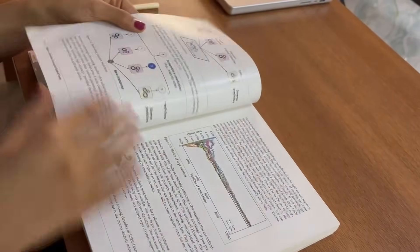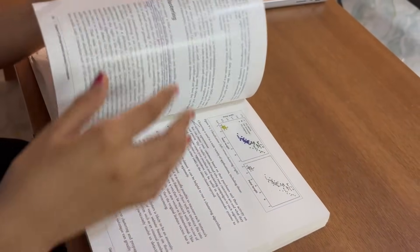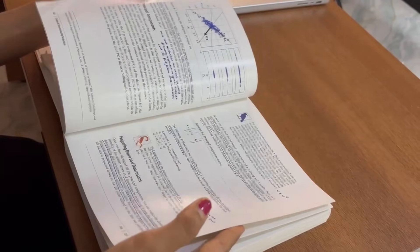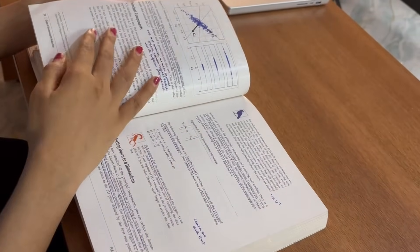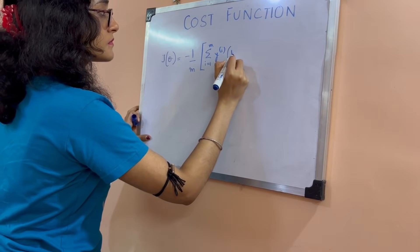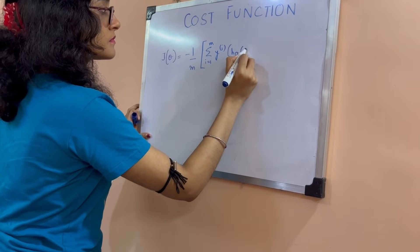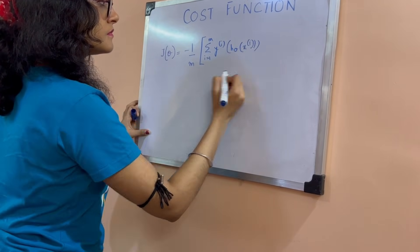In regression you have MSE, MAE, R². In classification you have accuracy, precision, recall, F1, ROC, AUC. With respect to algorithms, don't just know what they are and what they do — train, tune, and evaluate them.